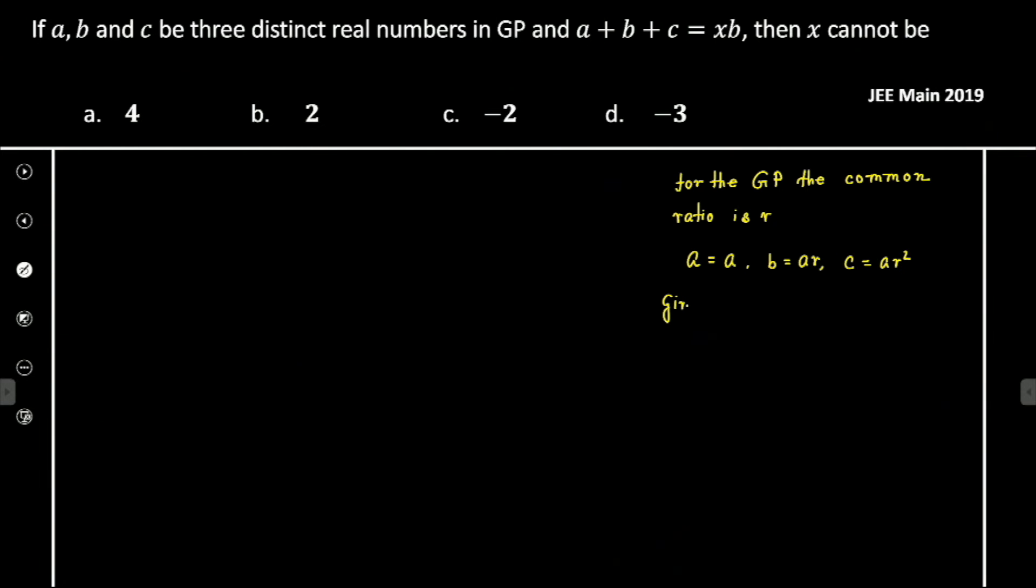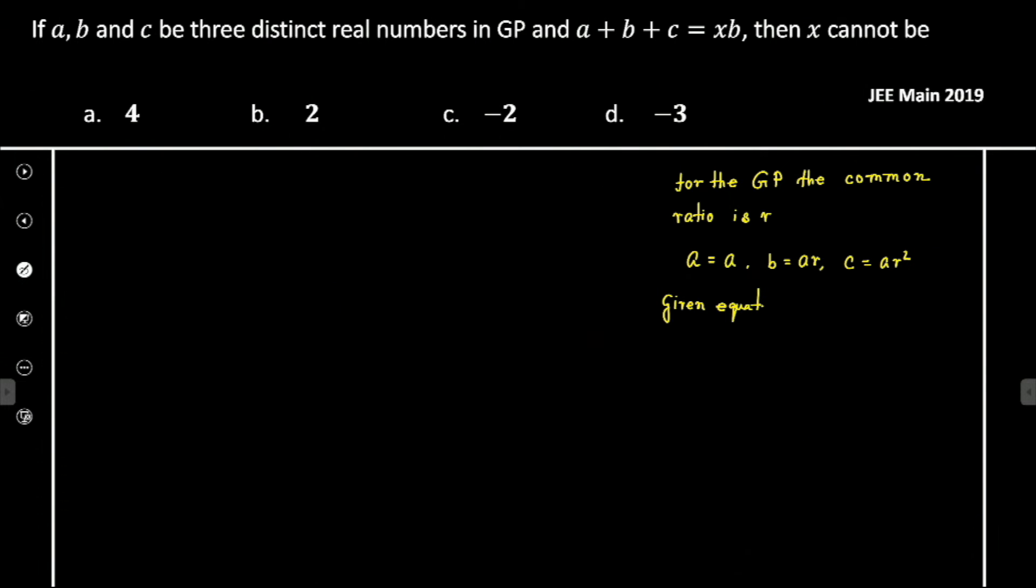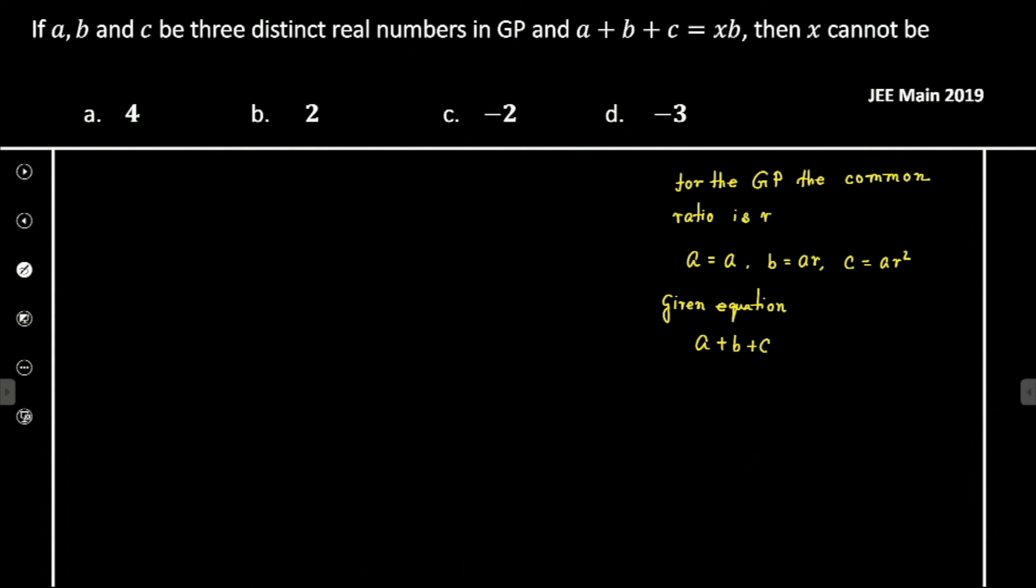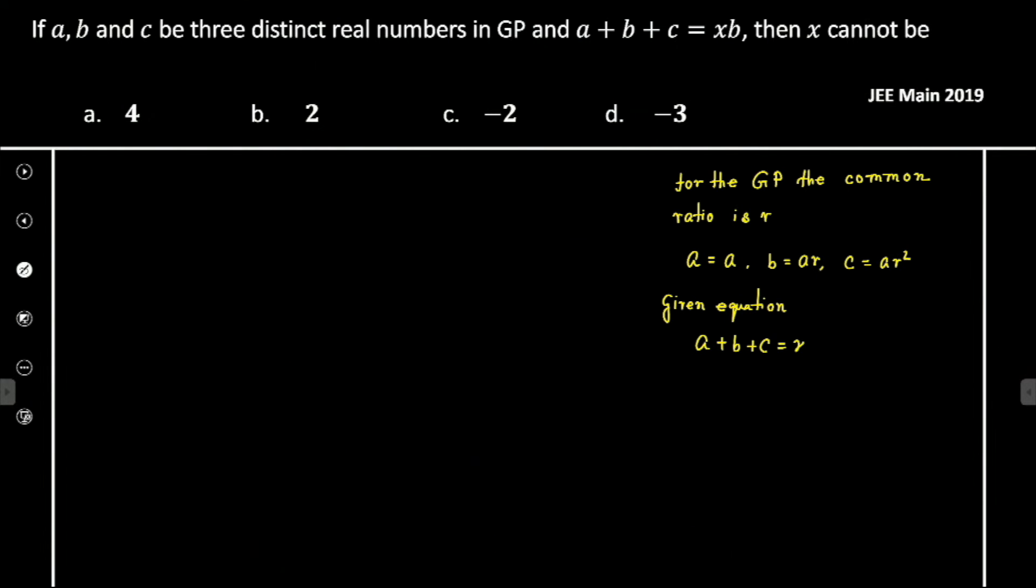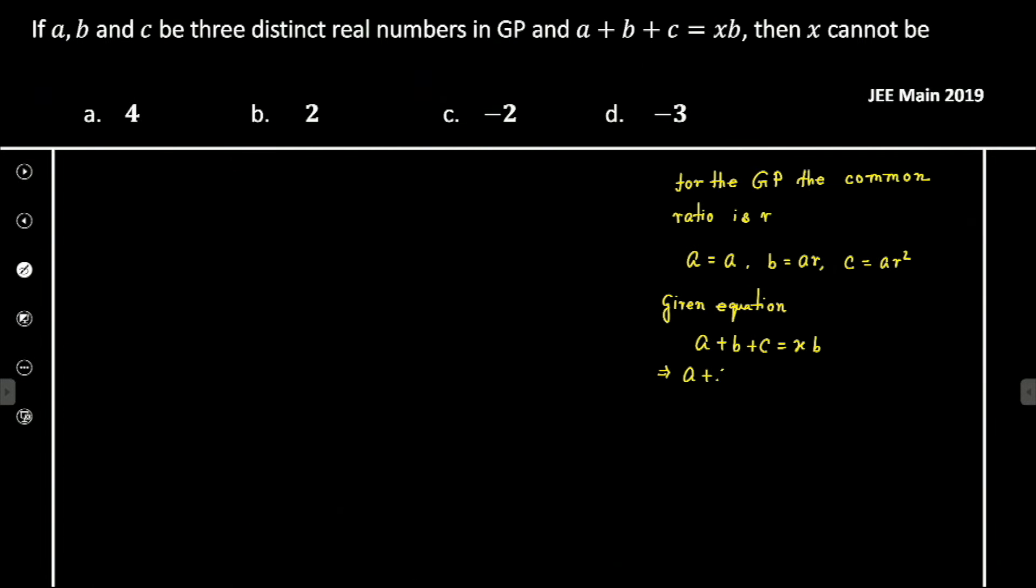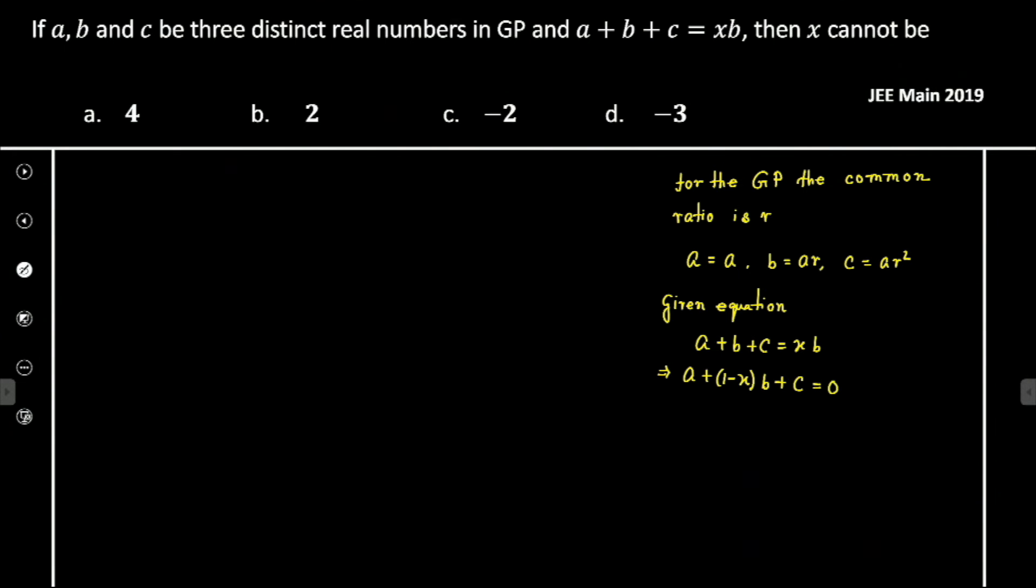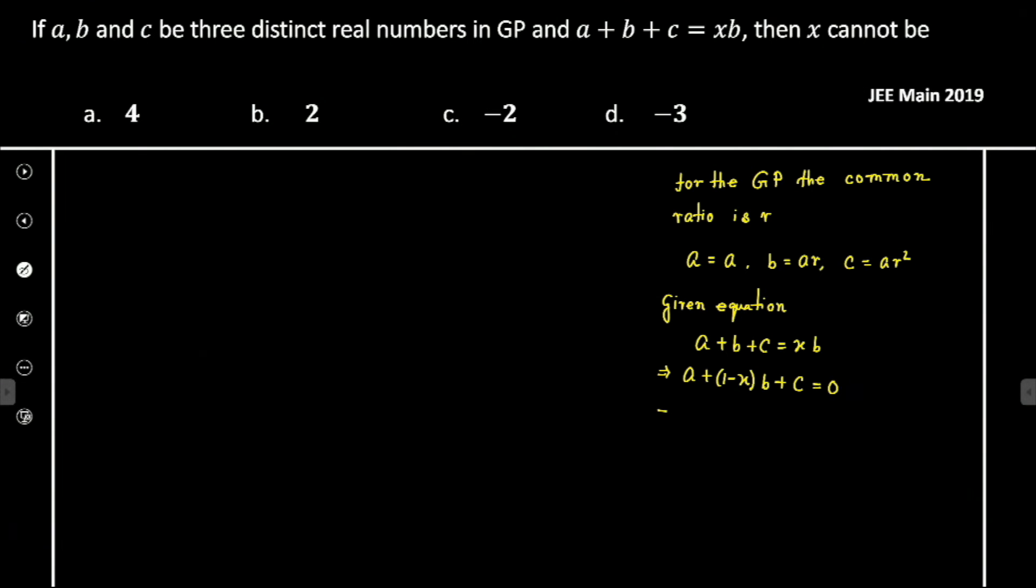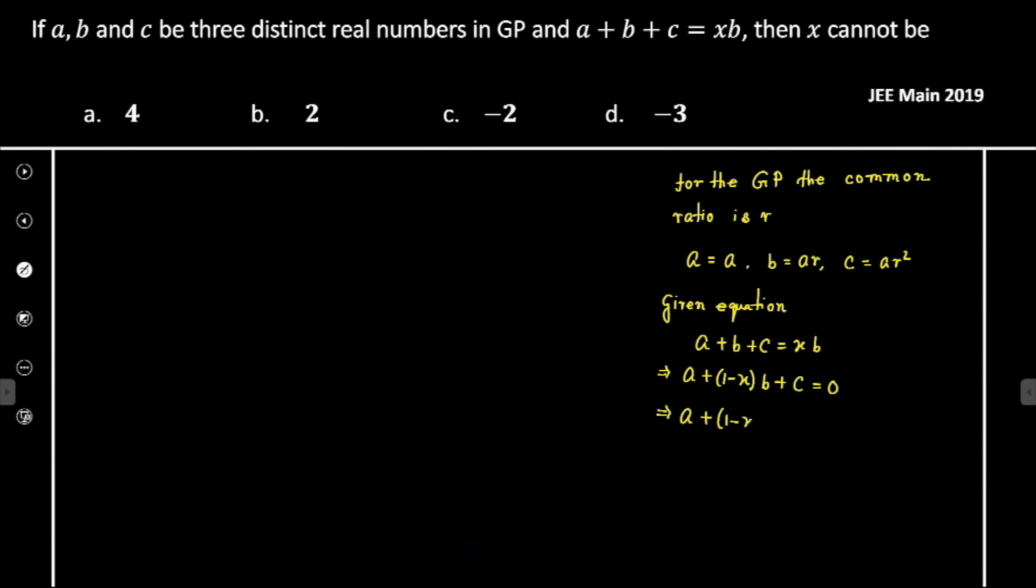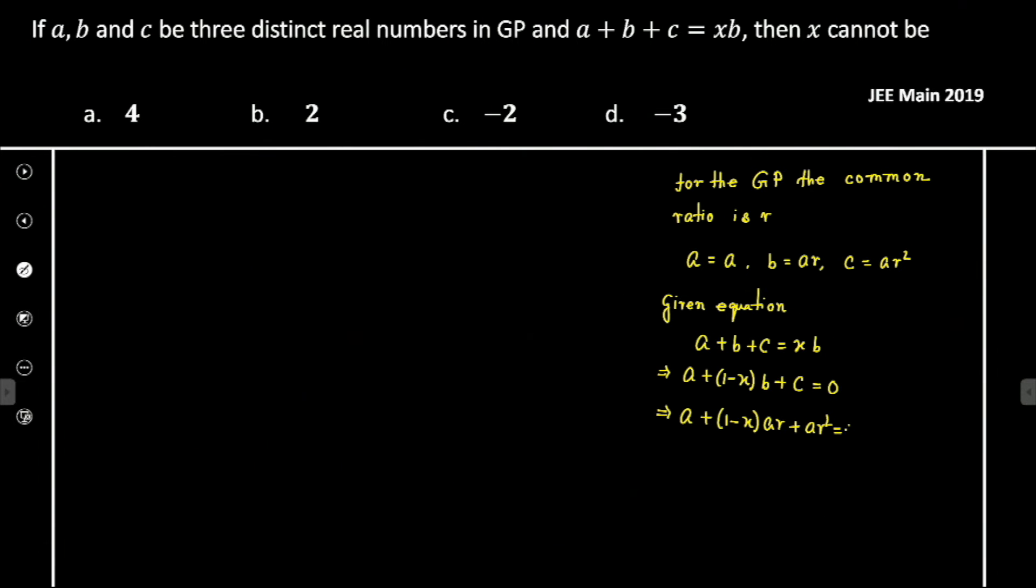The given equation becomes a + b + c = xb. This implies that a + (1 - x)b + c = 0. Just substitute the values, so we get a + (1 - x)ar + ar² = 0.